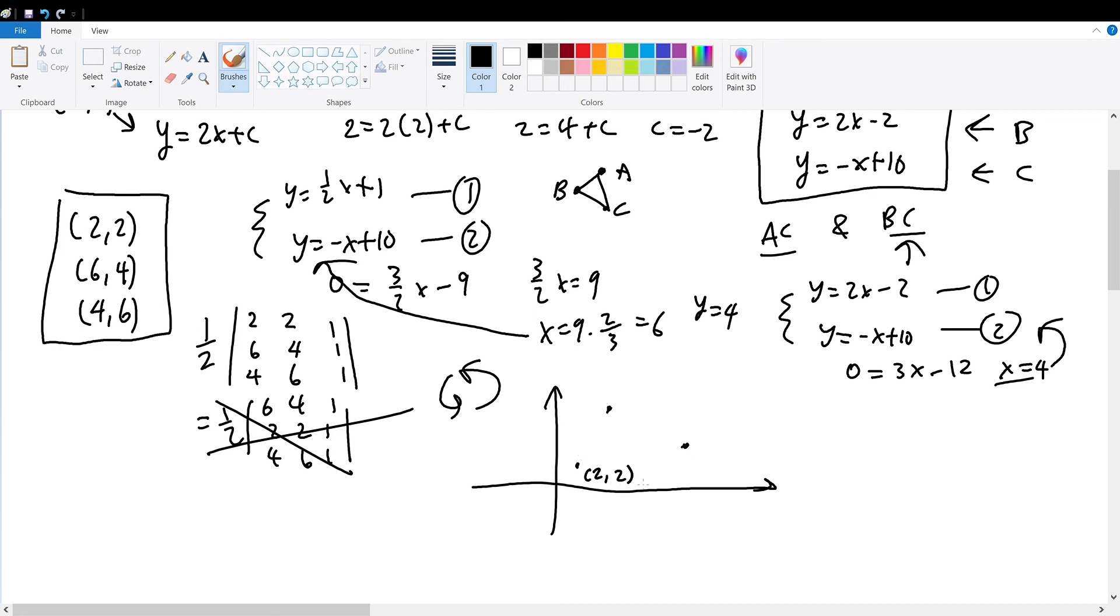So we can go counterclockwise, (2,2) to (6,4), (6,4) to (4,6), (4,6) to (2,2). So this ordering will check out.